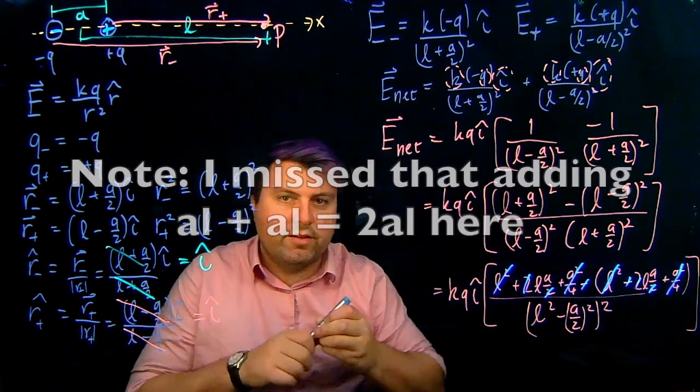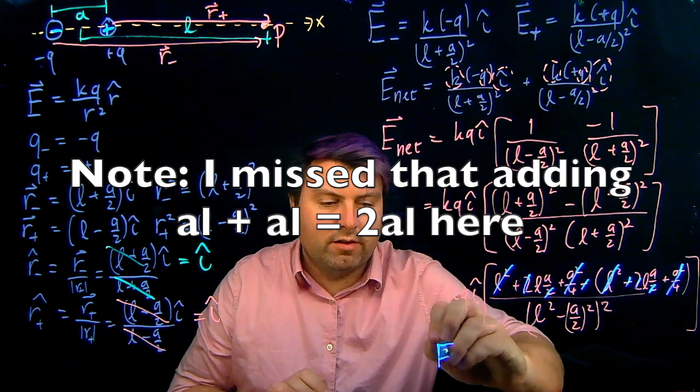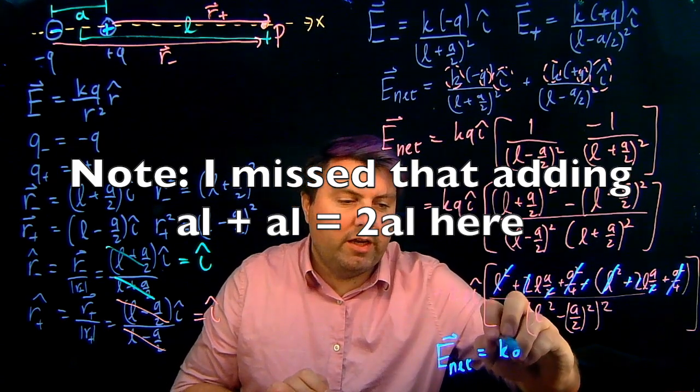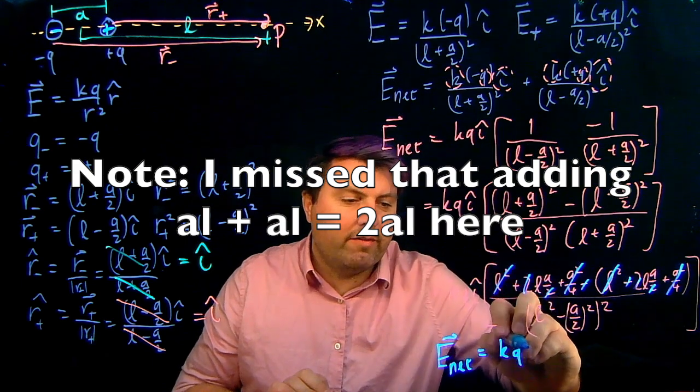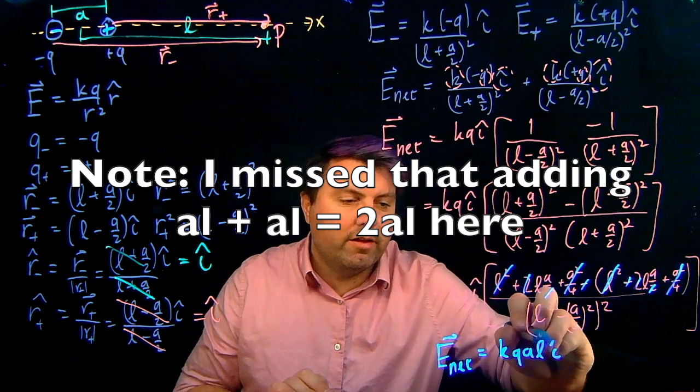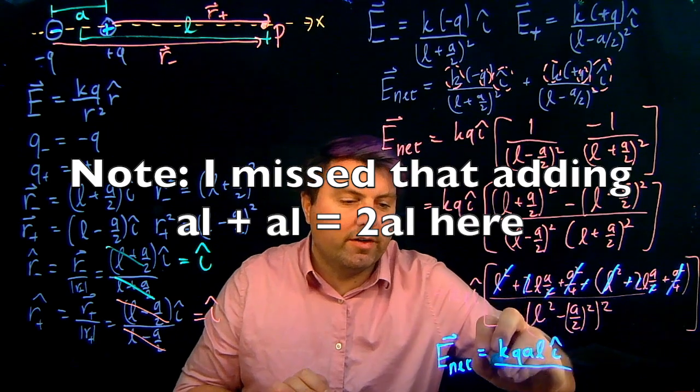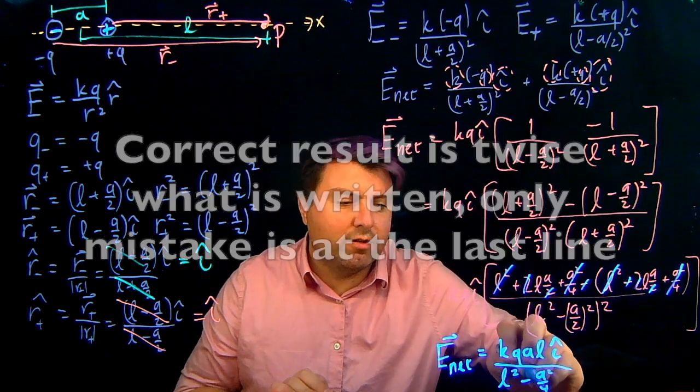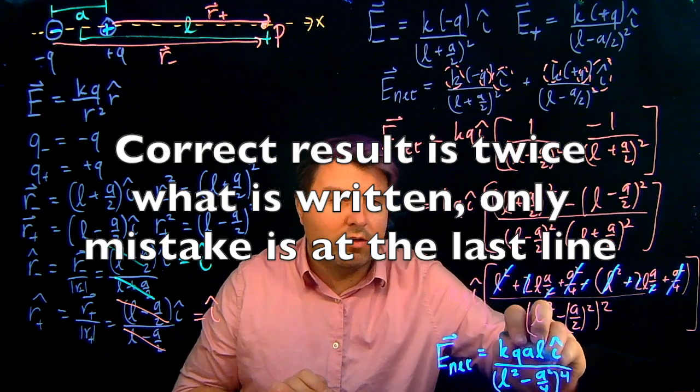So if we do this then, then our net electric field is going to be KQ times 2AL I hat over this bit of monstrosity, L squared minus A squared over 4 quantity squared.